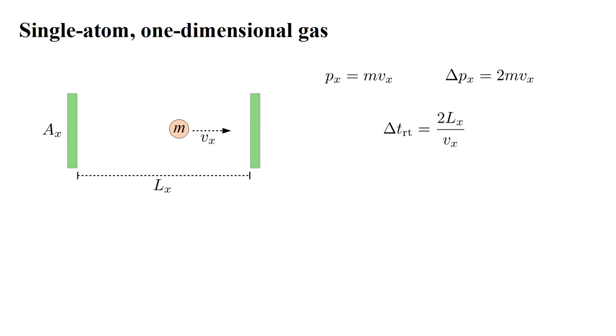Call the round trip time through the volume delta T round trip. This is the total round trip distance, 2 Lx, divided by the velocity Vx. In writing this, we are treating the atom's diameter as negligibly small. Force is the rate of change of momentum with respect to time. So the average force on a wall is delta Px over delta T round trip, which is 2 M Vx over 2 Lx over Vx.